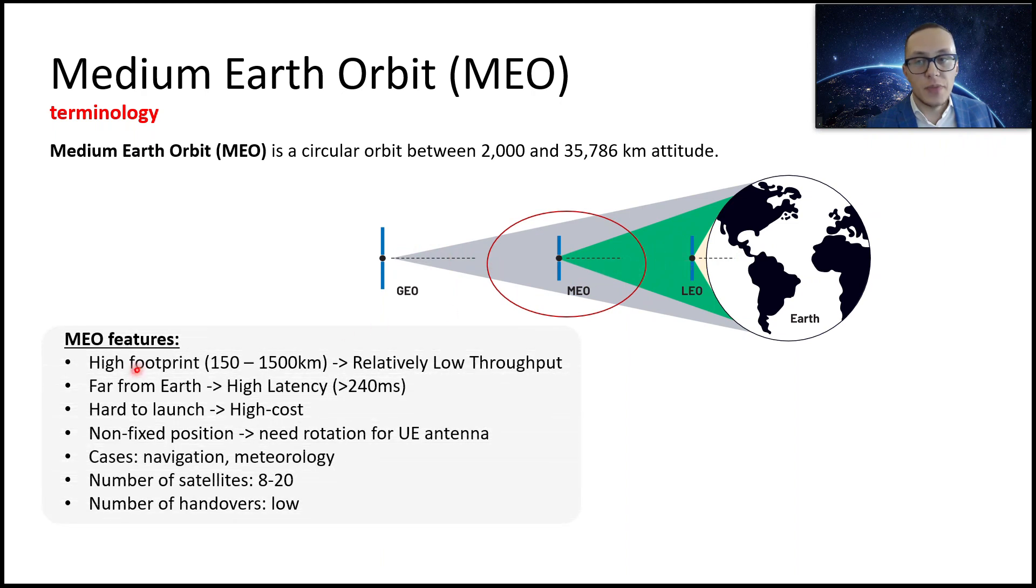What we can say about them? They also have high footprint and relatively low throughput. Latency is a little bit lower than for GEO stationary satellites, but still very high. Still very high cost. They have non-fixed position, which is required for rotation techniques for UE antenna. And mainly this is about cases navigation, meteorology. Even though we need a low number of satellites and handovers is not required.